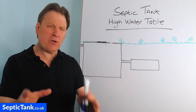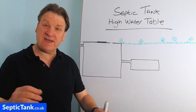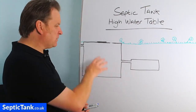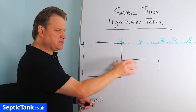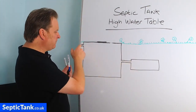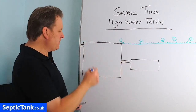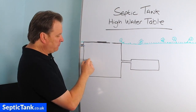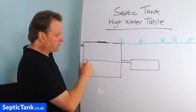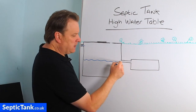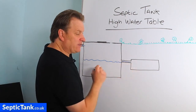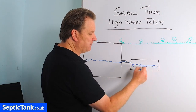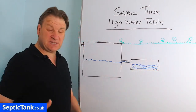Let me show you the problems that come from living in an area where the water table is quite high. So this is your septic tank and this is your soakaway. You've got your inlet pipe and your outlet pipe. Water comes into the septic tank and fills up to a certain level. It will then normally make its way down the outlet pipe and into the soakaway. That's how a septic tank and soakaway work.